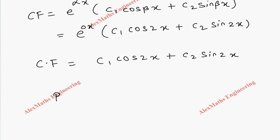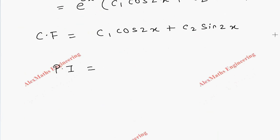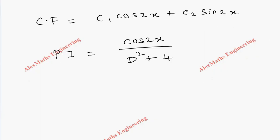Now coming to particular integral, on the right hand side we have cos 2x. cos 2x whole divided by D² + 4. So once again, as per the procedure, wherever D² is there, we have to substitute minus 2 whole square. So substitute D² as (-2)².